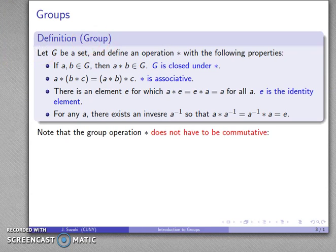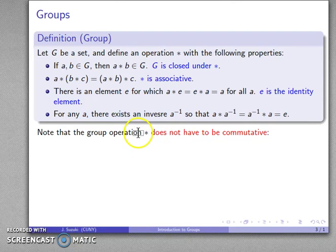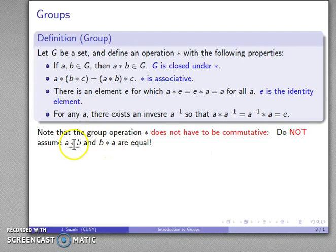One important feature of a group is that commutativity doesn't have to exist with the operation star. While A star E and E star A must be equal, and A star A-inverse and A-inverse star A must be equal, in general the operator star does not have to be commutative. Do not assume A star B and B star A are equal — the most common mistake in abstract algebra proofs, and really in higher mathematics, is assuming commutativity when you don't actually have it.